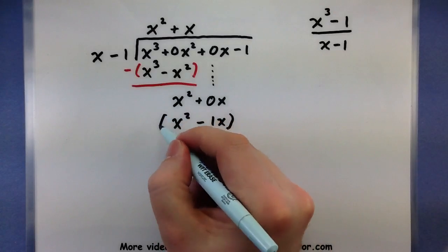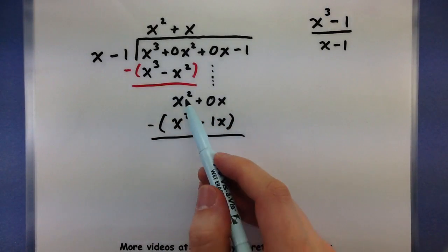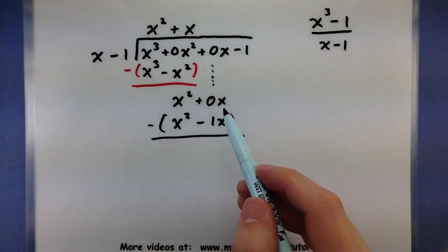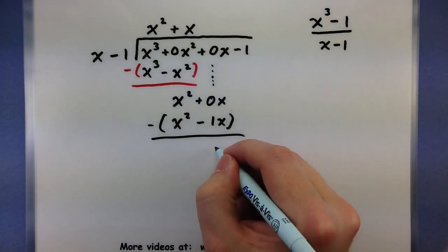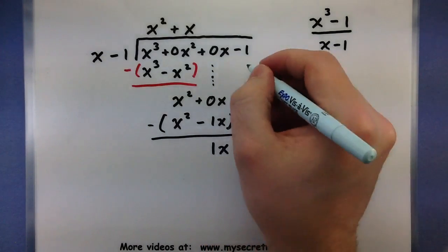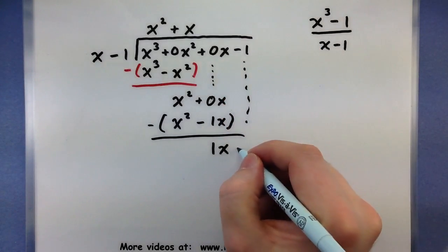So x² - x² is gone. 0 minus a -1, it's like plus 1. So 1x, and we'll bring down our -1.